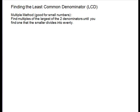Finding the least common denominator. First we'll look at the multiple method. It is good for small numbers. What we're going to do is find multiples of the largest of the two denominators until you find one that the smaller denominator divides into evenly.